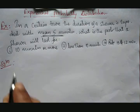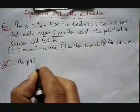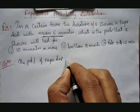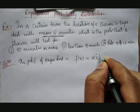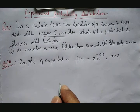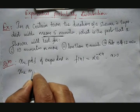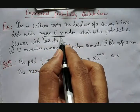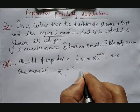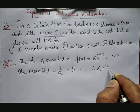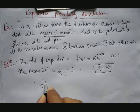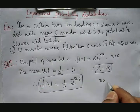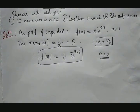The probability density function of this exponential distribution is f(x) = α · e^(−αx), where x > 0. The mean of the exponential distribution is 1/α. Since the mean is given as 5 minutes, we have 1/α = 5, therefore α = 1/5. So the PDF becomes f(x) = (1/5) · e^(−x/5) for x > 0.